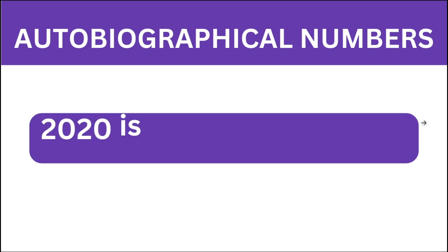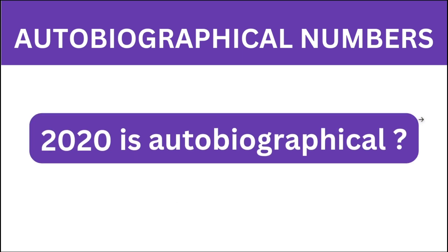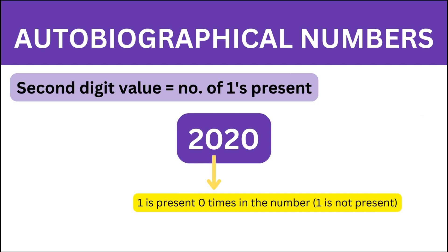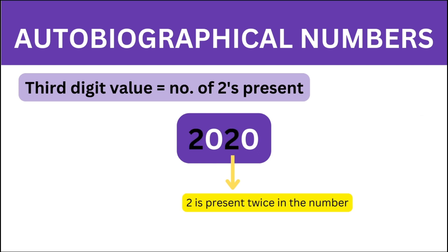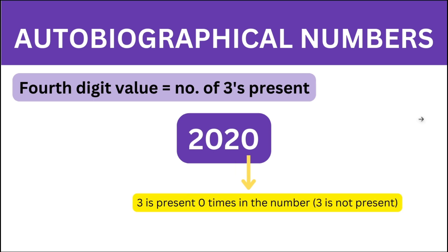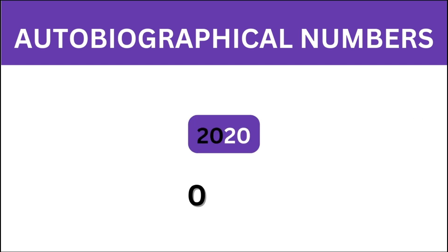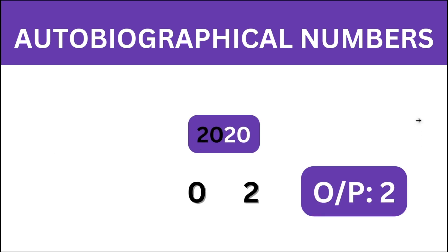Let's take another number, 2020. The first digit is 2, meaning there must be two zeros, which is true. The second digit is 0, meaning there should be no 1 present, which is also true. The third digit is 2, meaning 2 must appear twice, which is true. The fourth digit is 0, meaning there should be no 3, which is also true. So 2020 is an autobiographical number. The distinct digits are 0 and 2, so the answer is 2.